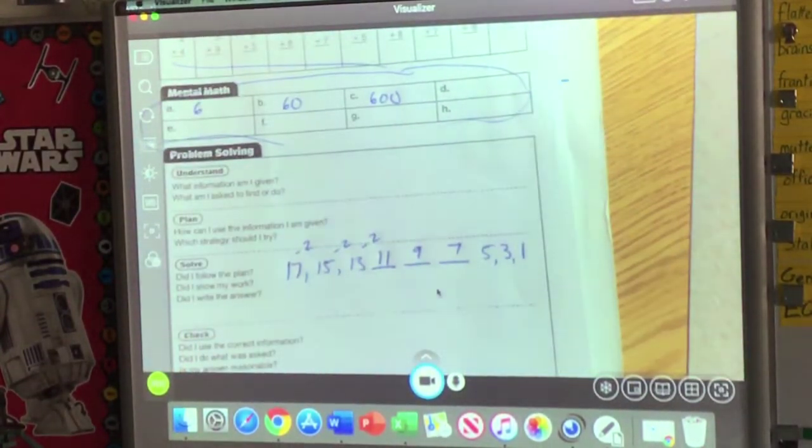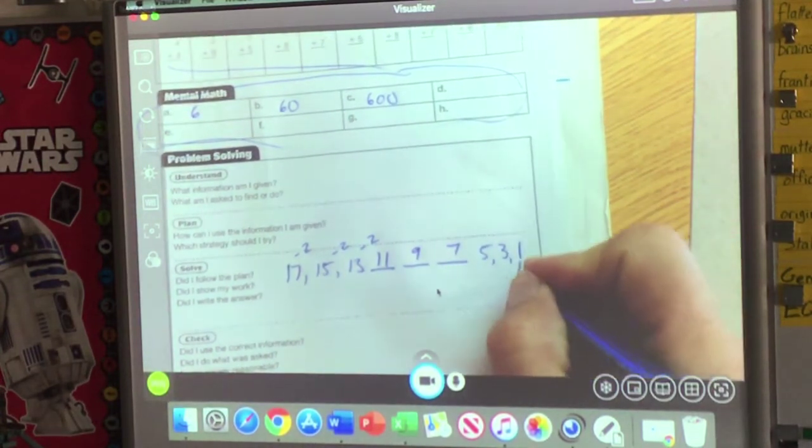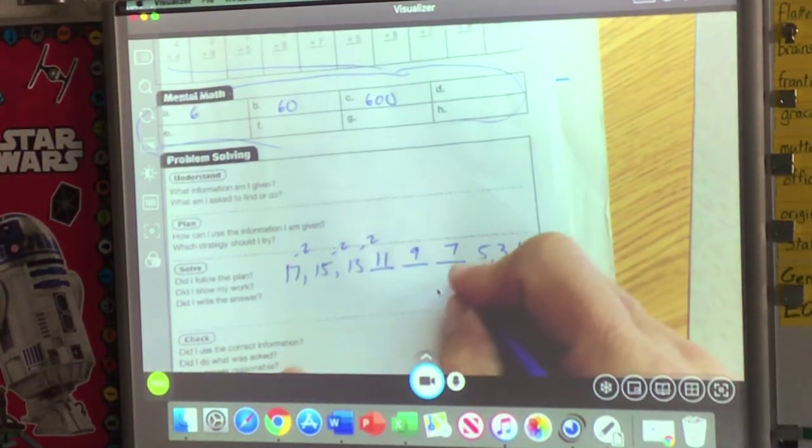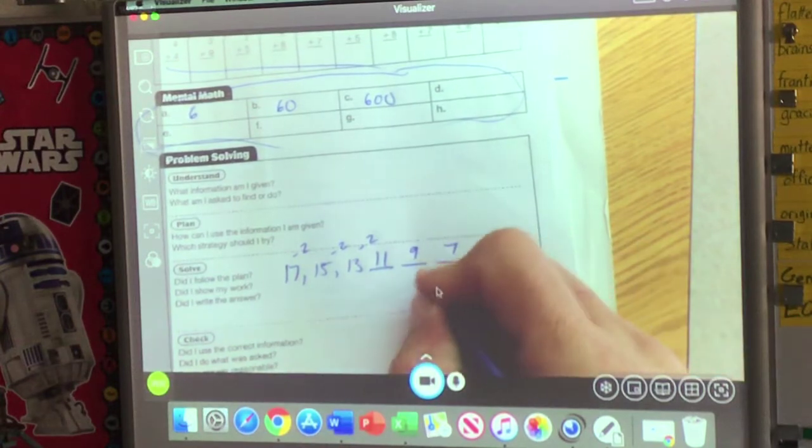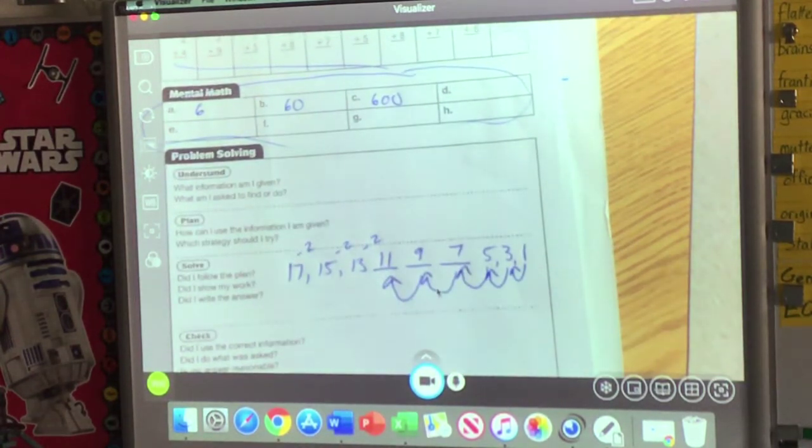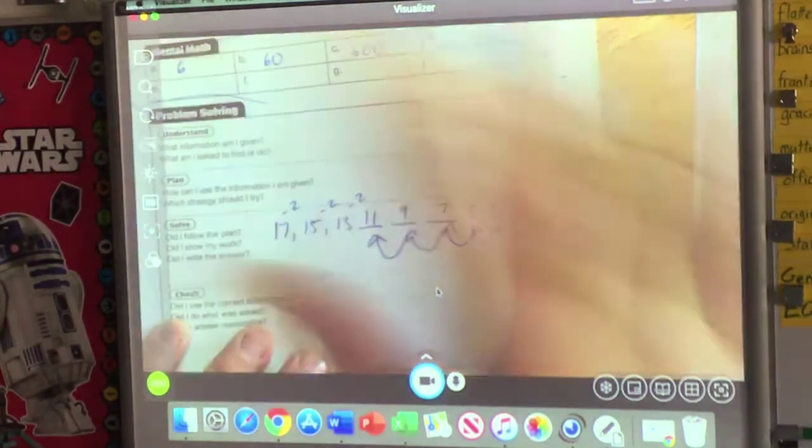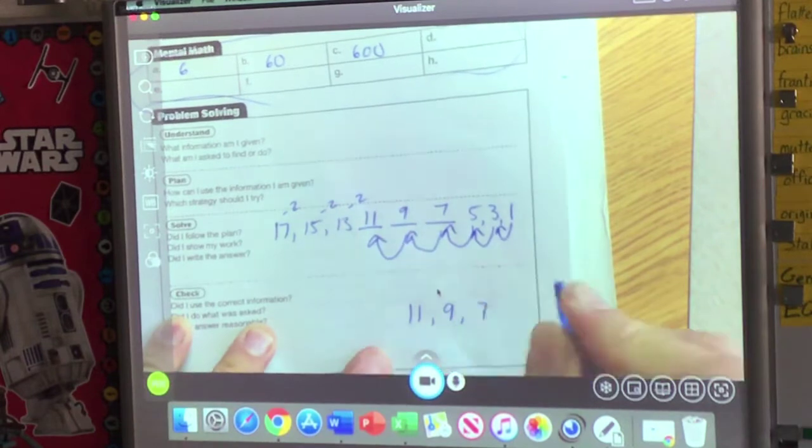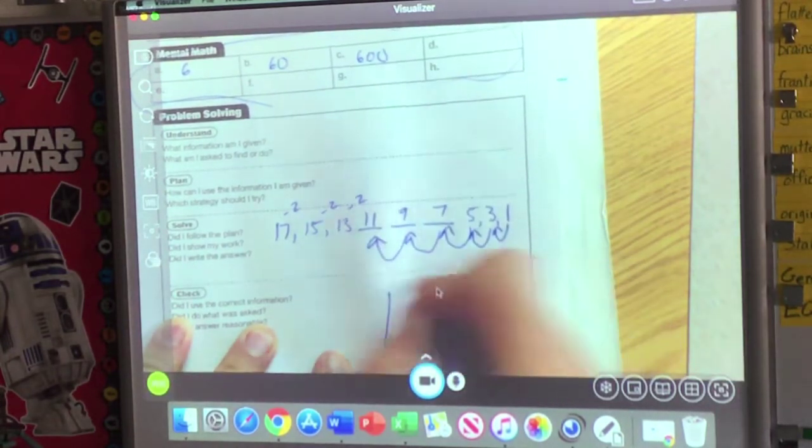The kids last year said, Mr. Bauer, if you don't like subtract, you can add. Back the other way. 1 plus 2 is 3. 3 plus 2 is 5. 5 plus 2 is 7. 7 plus 2 is 9. And 9 plus 2 is 11. Now, that's all of our work. And so somewhere in this area, you want to put your answer nice and neat. My answer is just these three numbers. And then I like to box up my answer.